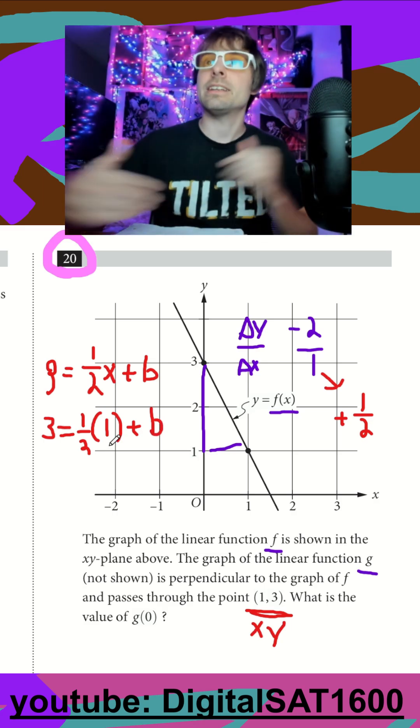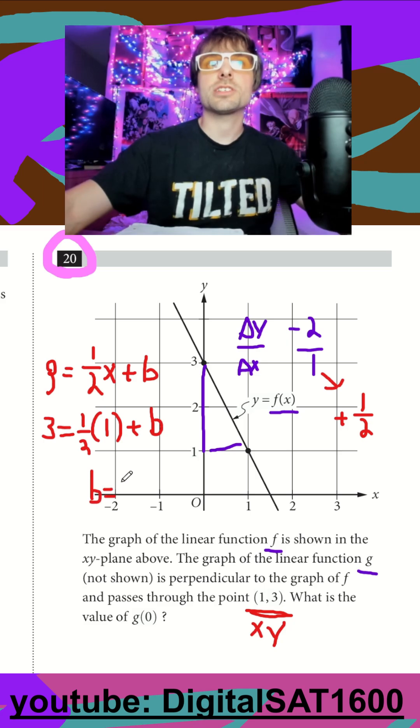And it looks like 1 half, I'm going to need an extra 2 and a half to get up to 3, so my b is just going to be equal to 2.5 here.